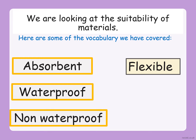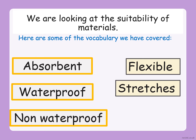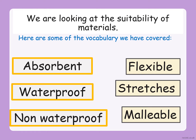We have the word flexible, and that's when a material can bend and stretch easily. We have the word stretches or stretchy — that's when you can pull a material as far as you can and it will not break. And we have the word malleable, and malleable means when you can bend, stretch, squeeze, twist — when you can move the material in lots of different ways and it will not break. It will mould to whatever shape you are creating.